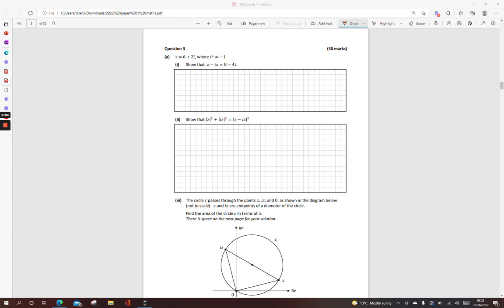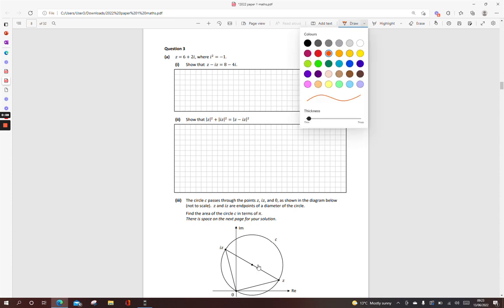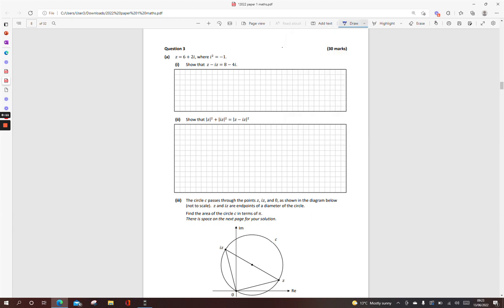Now the complex number question in paper 1 2022. Show that z minus az is equal to 8 minus 4i. So all they've simply done is given me the answer. When I work out the sum, I should get 8 minus 4i. So z is equal to 6 plus 2i. I'm going to sub that in. So 6 plus 2i minus a times my z, 6 plus 2i is equal to 8 minus 4i.